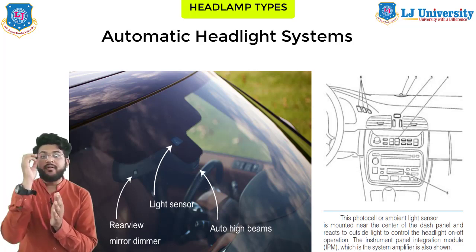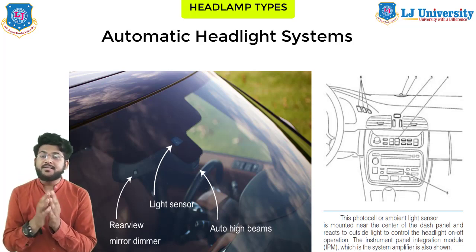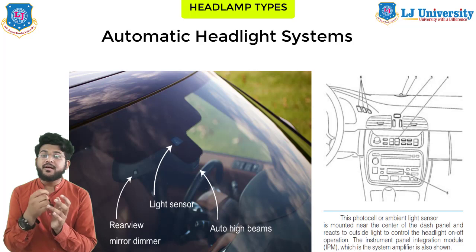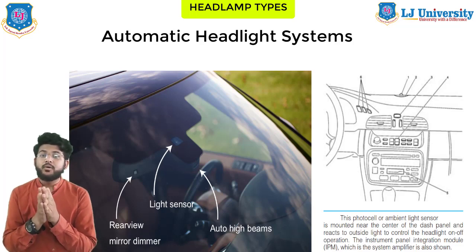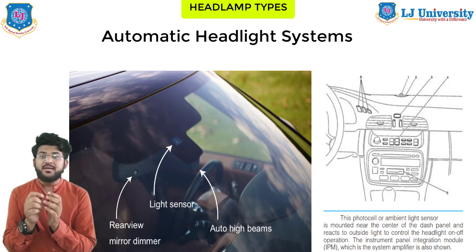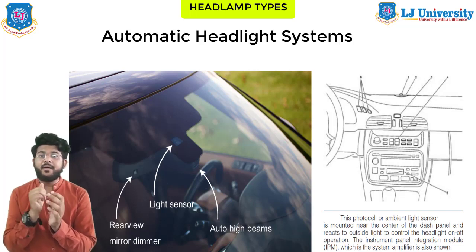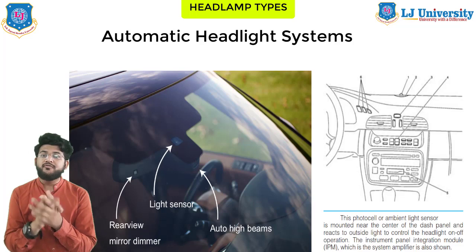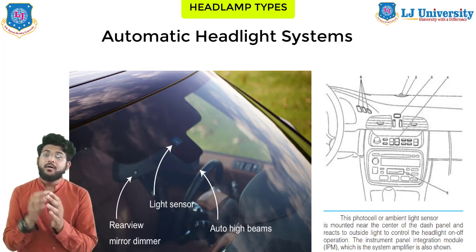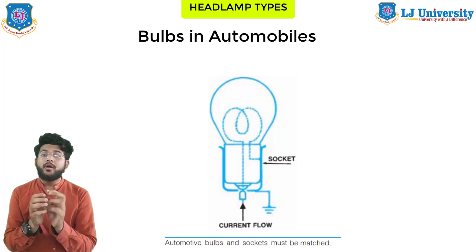The module often contains time delay circuitry so that when the vehicle is momentarily in darkness or light — such as when passing through tunnels, bridges, or under street lamps — the headlights do not flash on and off. When the automobile's ignition is turned off, the headlights remain on for a specified length of time and then turn off.